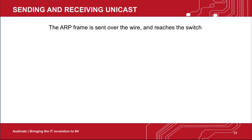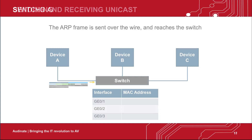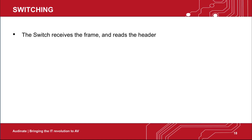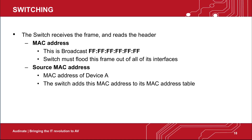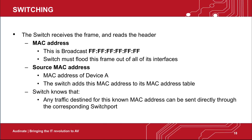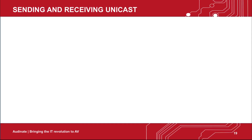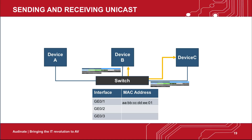The ARP frame is sent over the wire and it reaches the switch. The switch receives the frame and reads the header. The first field is the destination MAC address — this is the broadcast MAC address, FF in all octets. The switch knows from just this part of the frame that it must flood this frame out of all of its interfaces. The next field is the source MAC address — this is the MAC address of device A. The switch adds this MAC address to its MAC address table, because it has seen traffic coming from this MAC address on a particular switch port. It knows that any traffic destined for this known MAC address can be sent directly through the corresponding switch port. This is how a switch segments a collision domain by allowing unicast traffic as distinct from broadcast.